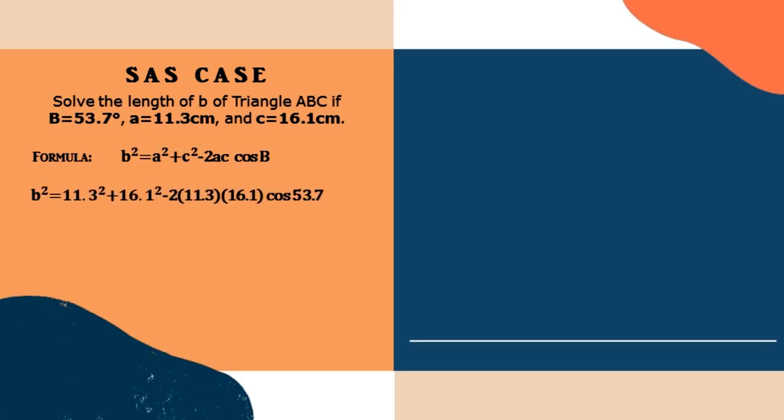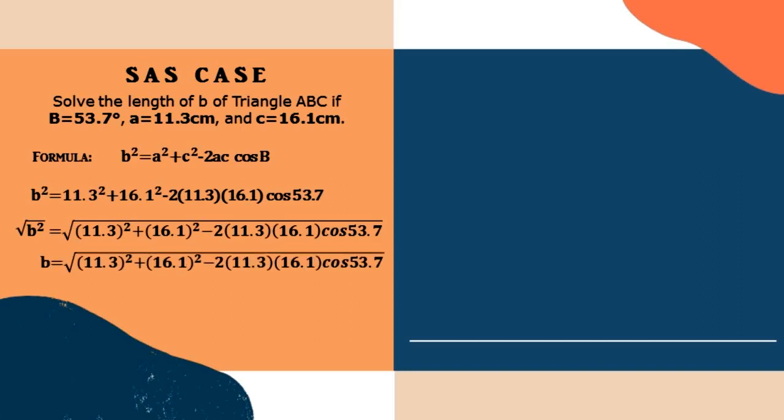First step is to substitute the given to the formula and then apply square root to both sides to cancel the exponent of b on the other side. So b is equal to square root of 11.3 squared plus 16.1 squared minus 2 times 11.3 times 16.1 times cosine 53.7. So our b is equal to square root of 171.49. Our final answer is 13.1 centimeters.